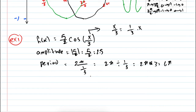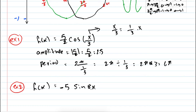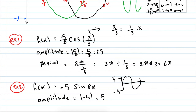Example 2: f of x equals minus 5 sine of 8x. The amplitude equals the absolute value of minus 5, which is 5. The highest point is 5 and the lowest is minus 5. The period equals 2 pi over k where k equals 8, so the period is 2 pi over 8 which equals pi over 4. The function repeats itself after pi over 4. This concludes the lecture on graphs of sine and cosine, amplitude, and period.